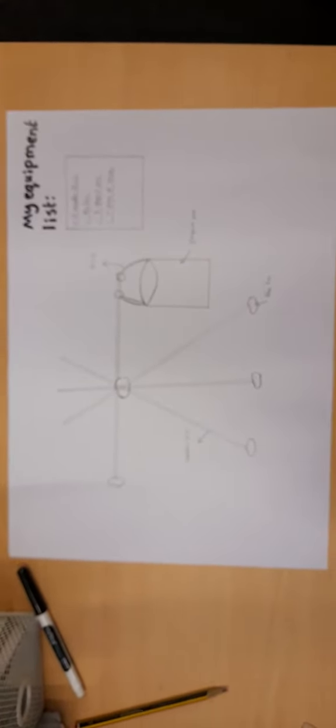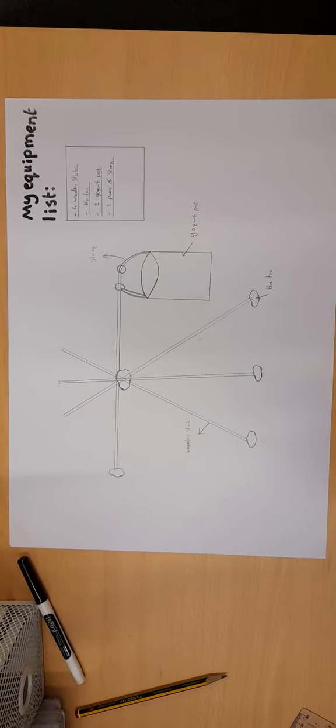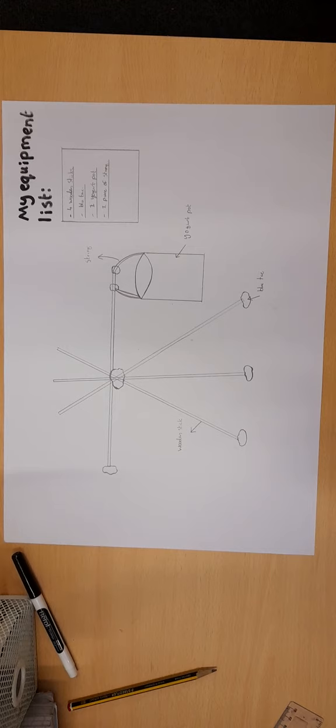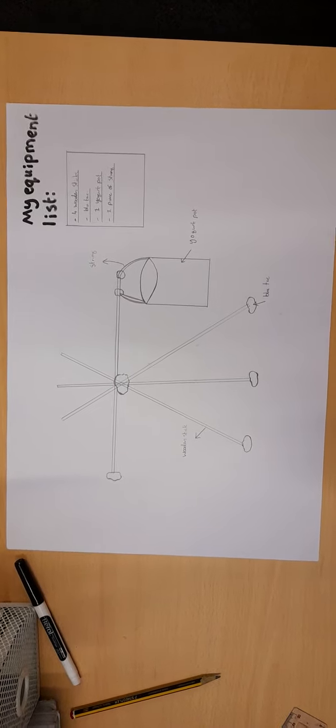So really simple, we're just going to draw out our shadoof, we're going to do our equipment list, and also we're going to label it as well. So I've got yogurt pot, I've got blue tack, I've got wooden stick, and I've got string. So really simple lesson today guys.